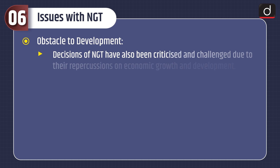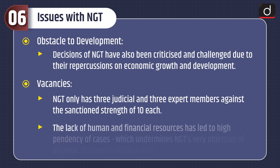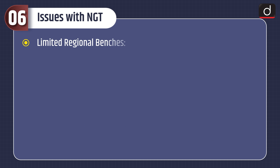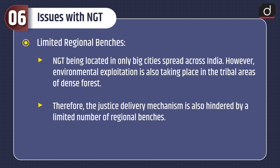Obstacle to development: decisions of NGT have also been criticized and challenged due to their repercussions on economic growth and development. Vacancies: NGT only has three judicial and three expert members against the sanctioned strength of 10 each. The lack of human and financial resources has led to high pendency of cases, which undermines NGT's very objective of disposal of appeals within six months. Limited regional branches: NGT being located in only big cities spread across India, however, environmental exploitation is also taking place in tribal areas of dense forest. Therefore, the justice delivery mechanism is hindered by a limited number of regional benches.